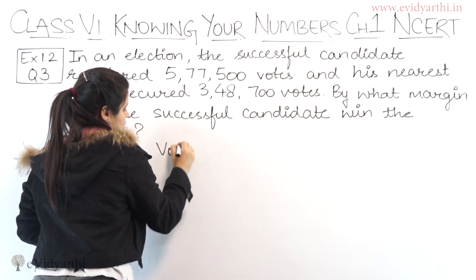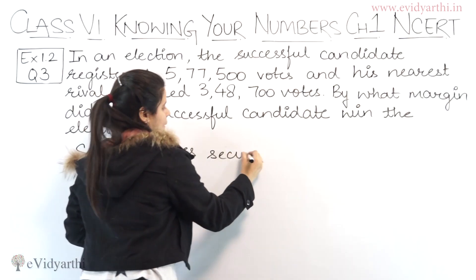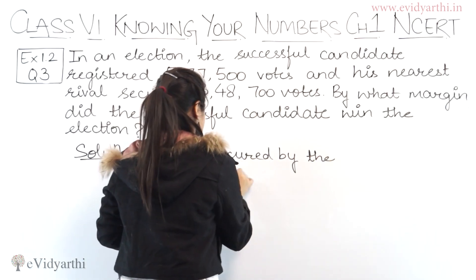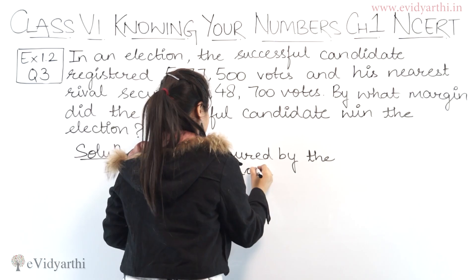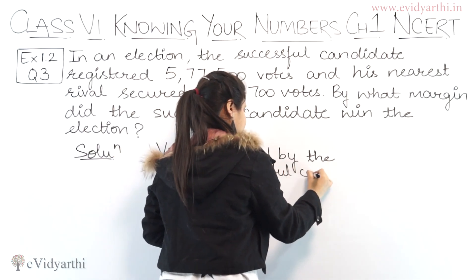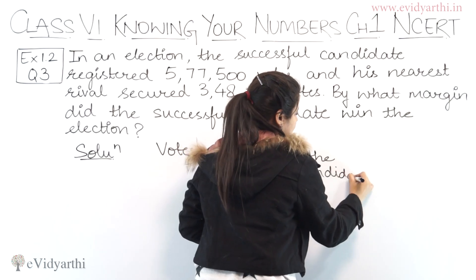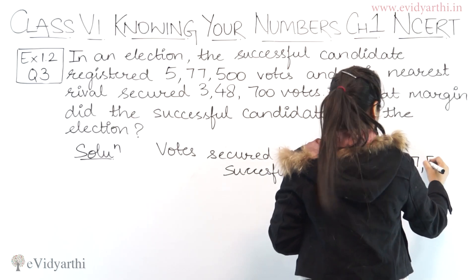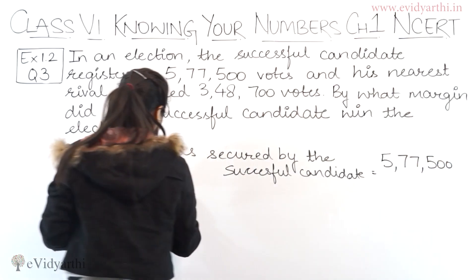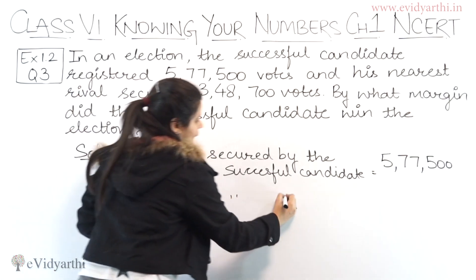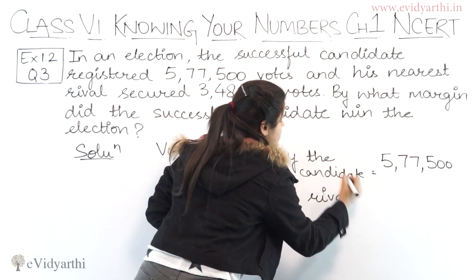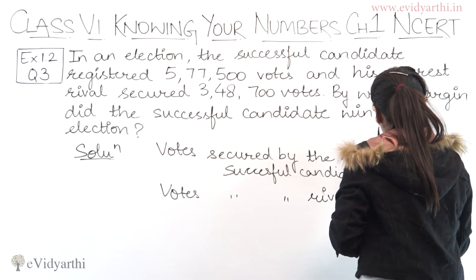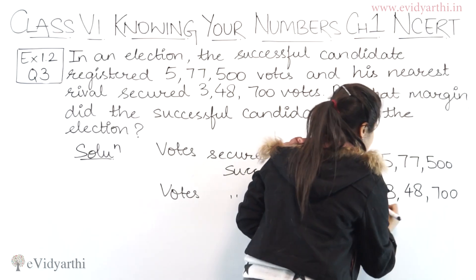Votes secured by the successful candidate is 5,77,500. Votes secured by the rival is 3,48,700. Now we will subtract these two values.